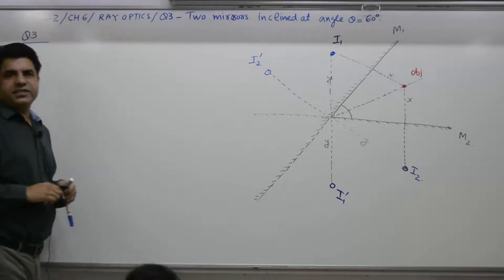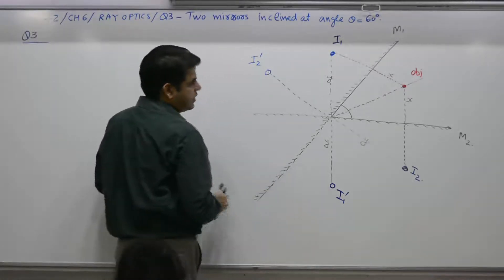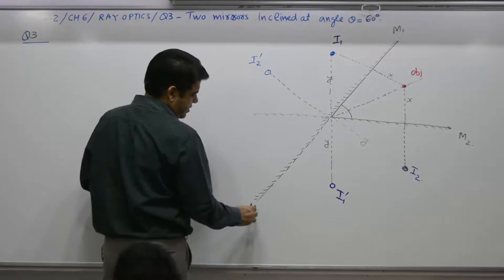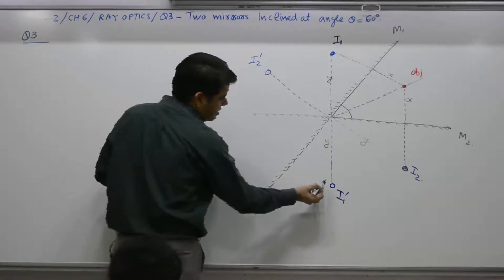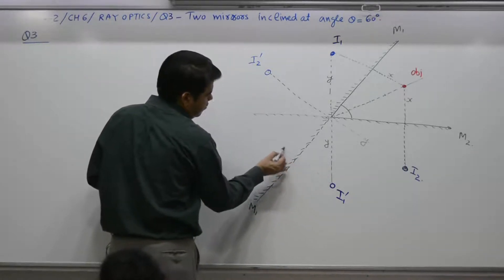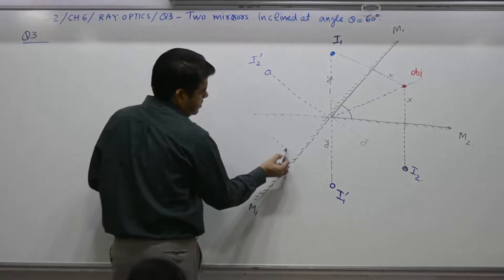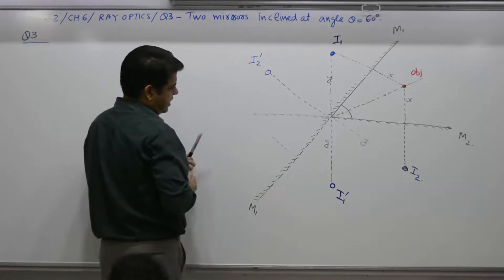Yes. Next. I1 dash is placed in front of what? I1 dash is placed in front of this mirror M1. So draw a perpendicular, move equal distance. You get its image somewhere here. I1 double dash.